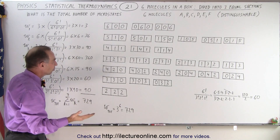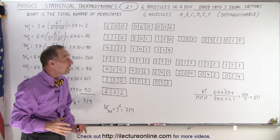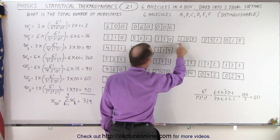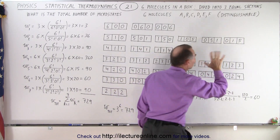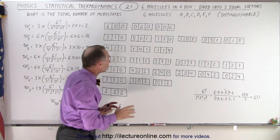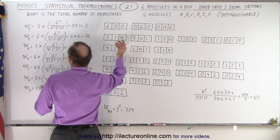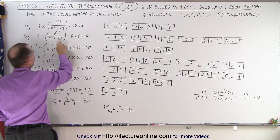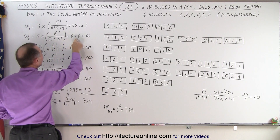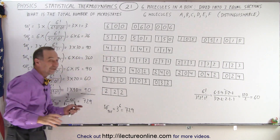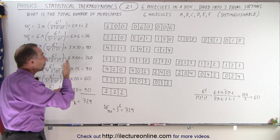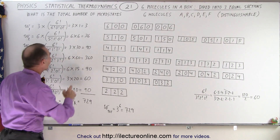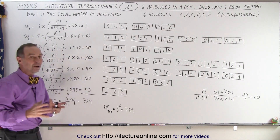What if we have five, one, and zero? There are six different ways in which they can line up: (5,1,0), (5,0,1), (1,5,0), (1,0,5), (0,5,1), (0,1,5). For each of those, we have six factorial divided by five factorial, one factorial, zero factorial, which equals six. Six times six gives 36 different microstates for the macrostate (5,1,0).